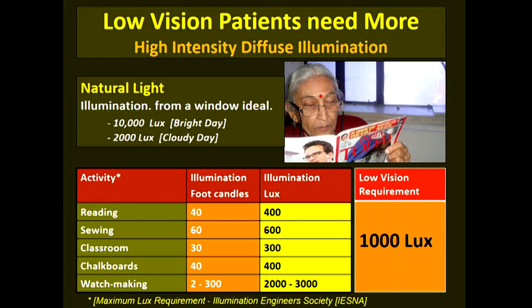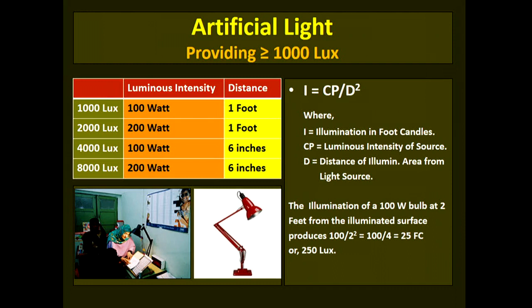Normal illumination for reading requires 400 lux, for sewing about 600 lux, and for classrooms about 300 lux. A low vision patient will require high-intensity diffuse illumination of about 1000 lux to break through the mistiness of their vision. This can be provided by either natural or artificial lighting. Natural light near a window provides about 10,000 lux on a bright day and 2,000 lux on a cloudy day. For artificial light, an angle-poised or gooseneck lamp is recommended, as the direction and distance from the light source can be adjusted with these two types of lamps.